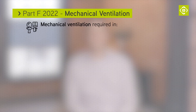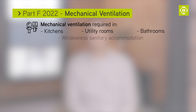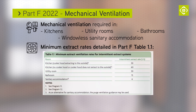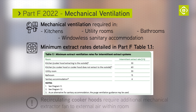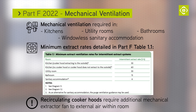Mechanical ventilation will be required in kitchens, utility rooms, bathrooms and windowless sanitary accommodation. Minimum extract rates are detailed in Table 1.1 of the new approved document. There is now clear guidance that recirculating cooker hoods require an additional mechanical extract fan to external air within the room.